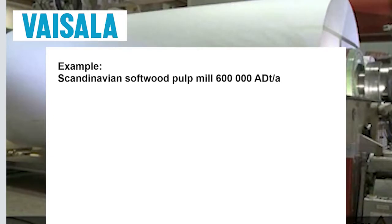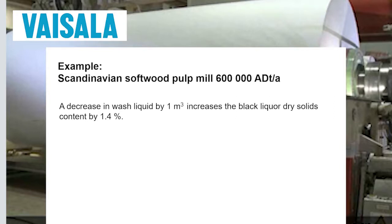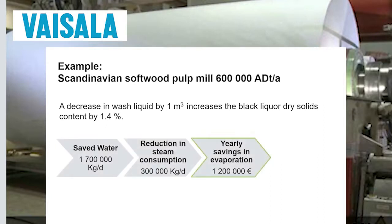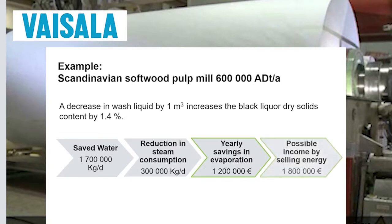Let's take a look at an example of how a mill's economy can be enhanced through brown stock washing. If a standard size mill decreases the washing liquid by one cubic meter per ton of pulp, the black liquor dry solids increase 1.4 percent. The saved water and reduction in steam consumption bring yearly savings worth 1.2 million euros. If the mill sells the energy back to the grid, the yearly savings can rise as high as 3 million euros.